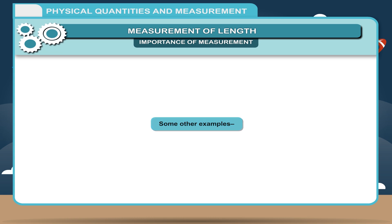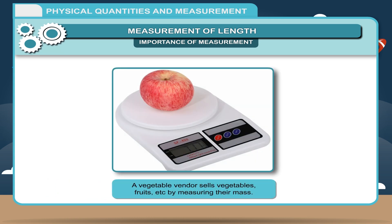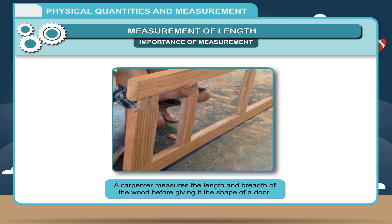Some other examples. A vegetable vendor sells vegetables, fruits, etc. by measuring their mass. A carpenter measures the length and breadth of the wood before giving it the shape of a door.